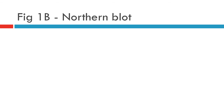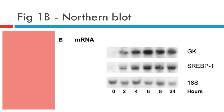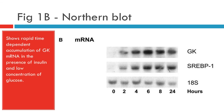Figure 1B shows a northern blot — time course of GK and SREBP1 mRNA accumulation in hepatocytes cultured in the presence of 5 millimolar glucose and 100 nanomolar insulin. Total mRNA were subjected to electrophoresis and blot hybridisation.